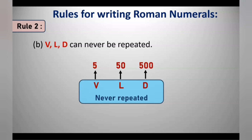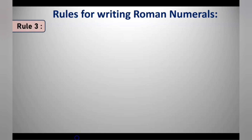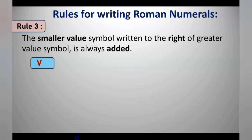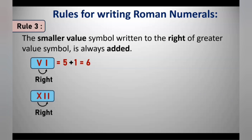Rule 3: When a smaller value symbol is written to the right of a greater value symbol, it is always added. For example, writing I to the right of V gives VI, which means 5 plus 1, that is 6. Similarly, writing two I's to the right of X gives XII, which means 10 plus 1 plus 1, that is 12.